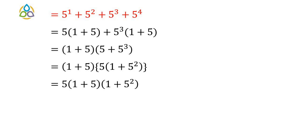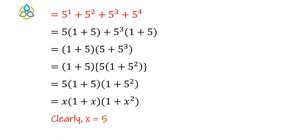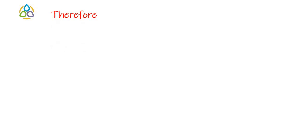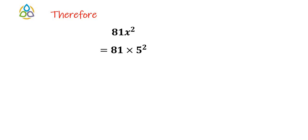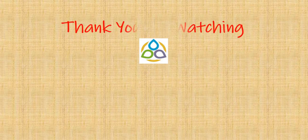This expression equals x into 1 plus x into 1 plus x square as given, so clearly the value of x is 5. Therefore 81x square equals 81 into 5 square, which is 81 into 25, which equals 2025. Hence 81x square is 2025. Thank you for watching this video.